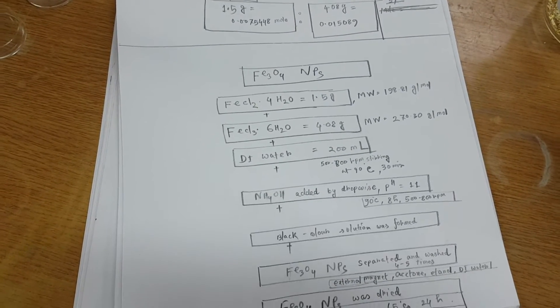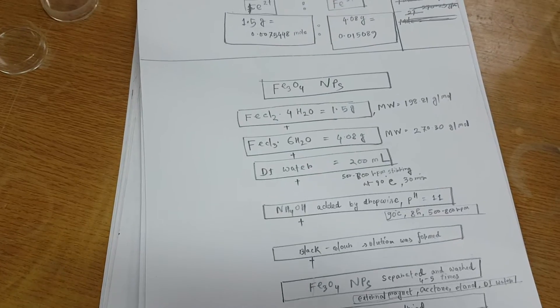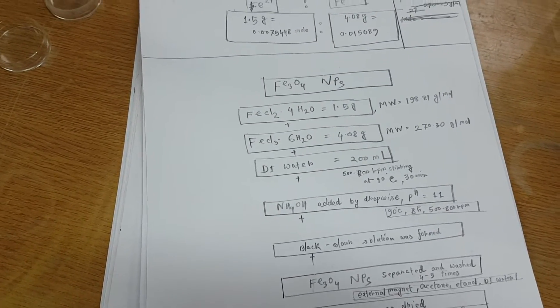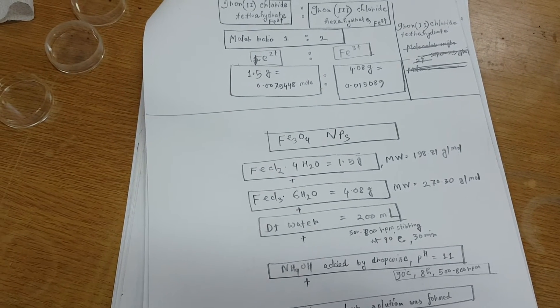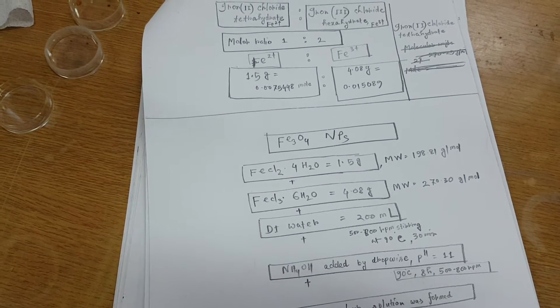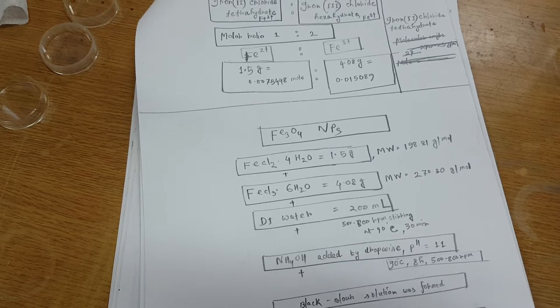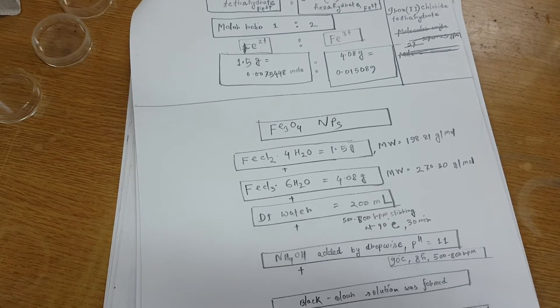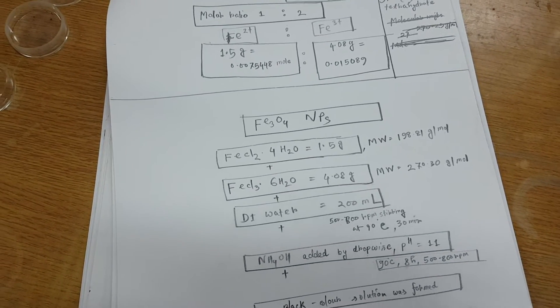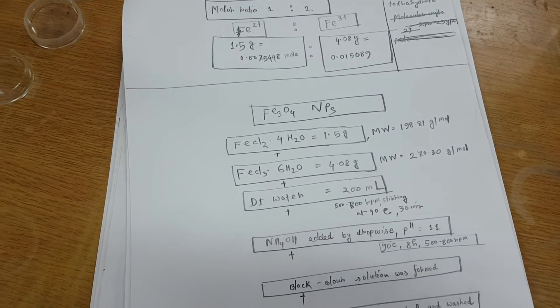So basically, iron 2 plus and iron 3 plus has the molar ratio 1 to 2. So if I take 1.5 gram of FeCl2, then FeCl3 comes out 4.08 gram because of the high molecular weight to 70.30 gram per mole.